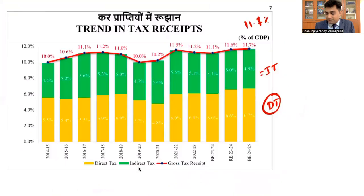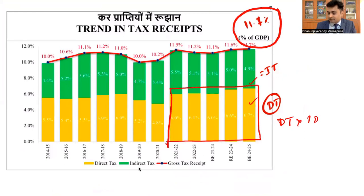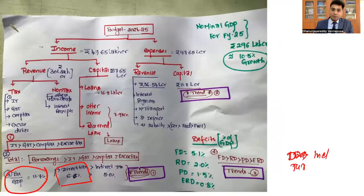You have to remember the trends in tax to GDP. Tax to GDP is 11.7% of GDP this year; direct taxes are heavier compared to indirect taxes. Looking at the trend: values are around 10%, 10.6%, 11.1%, 11.2%, 11%, 10%, 12.2%, 11.5%, 11.2%, 11.5%, 11.5%, 11.6%, 11.7%. There is no consistent trend as such, but one consistent trend observed from 2022 is that direct taxes are dominating more than indirect taxes. In the revenue income, taxes are highest — income tax, GST, corporation tax, excise tax in descending order.